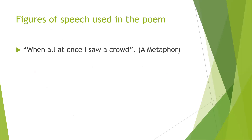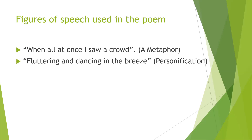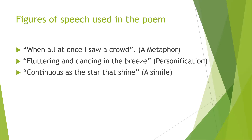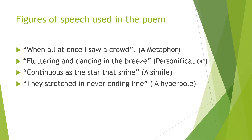Now, figures of speech used in the poem: 'when all at once I saw a crowd' — crowd is compared with the large number of daffodils, so it is an example of metaphor. 'Fluttering and dancing in the breeze' — giving human quality to the daffodils, that is personification. 'Continuous as the stars that shine' — comparing stars with daffodils using 'as,' so it is simile. 'Never-ending line' — the poet exaggerates saying the daffodils had no end, so this is hyperbole.